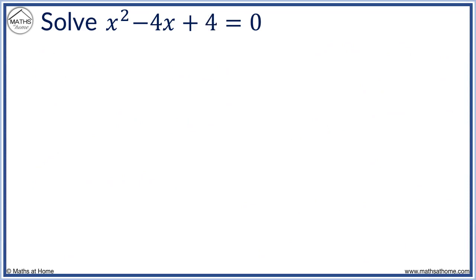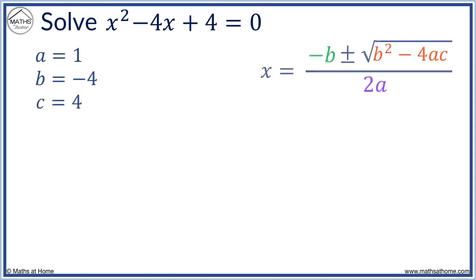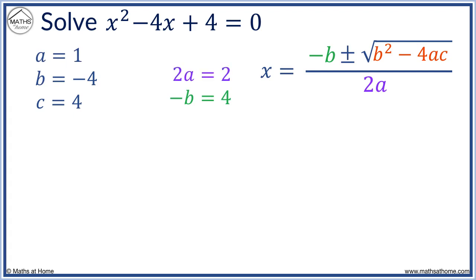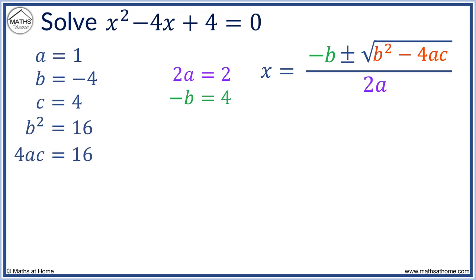Here we have x squared minus 4x plus 4 equals 0. a equals 1, b equals minus 4, and c equals 4. If b equals minus 4, minus b equals plus 4. a equals 1, so 2a equals 2. b squared is minus 4 times minus 4, which equals 16. 4ac is 4 times 1 times 4, which equals 16. Here, b squared minus 4ac is 16 minus 16, which equals 0.